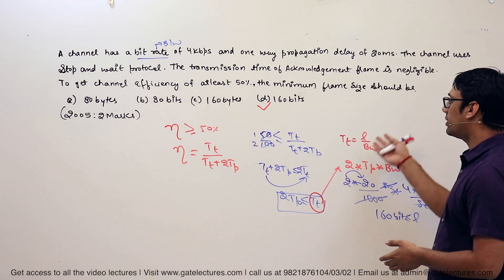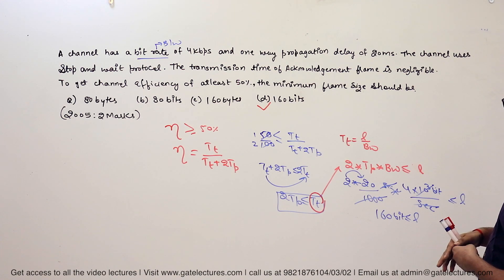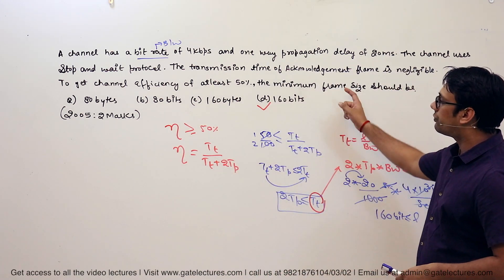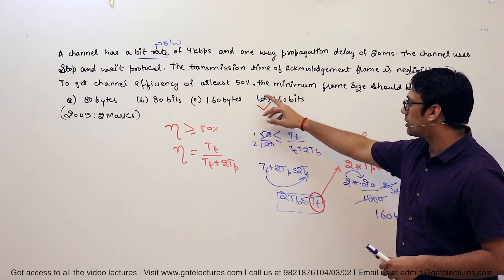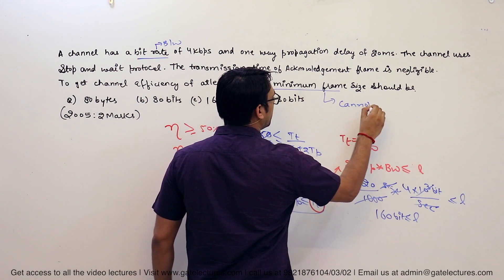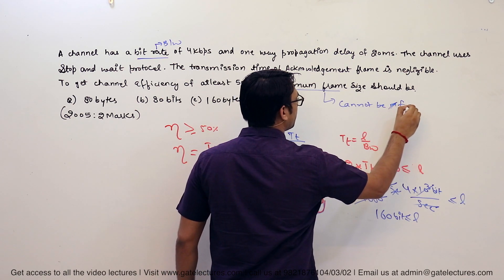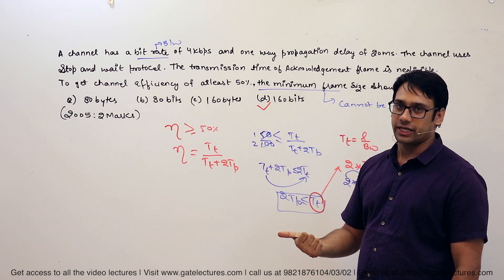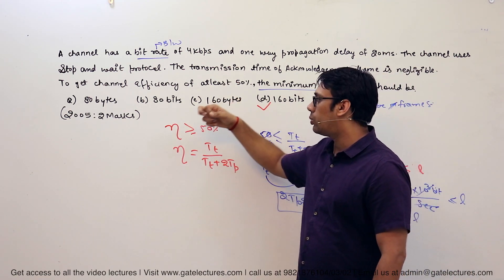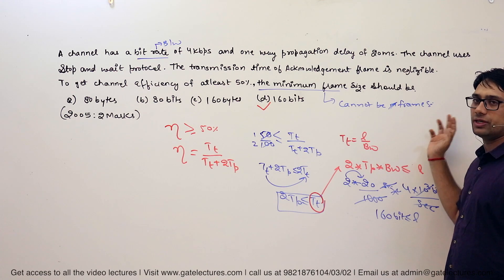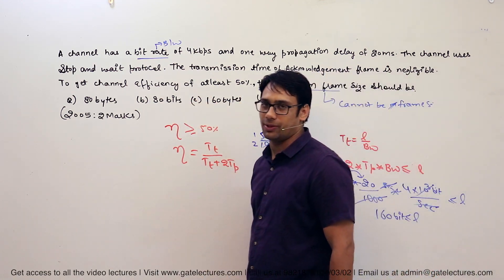So the minimum frame size should be at least 160 bits. Now, if the question is rephrased as 'which of the following cannot be the minimum frame size?' — then the answer would be option B, which is 80 bits. Anything greater than 160 bits is a correct frame size, so 160 bytes and 80 bytes are also correct, but 80 bits is not a valid answer in that case.